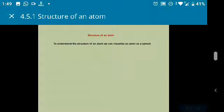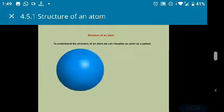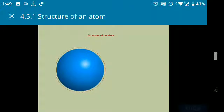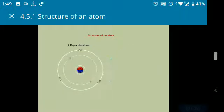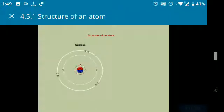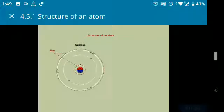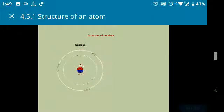To understand the structure of an atom, we can visualize an atom as a sphere. The atom has two major divisions. In the center of the atom, there is a nucleus. The size of the nucleus is extremely small compared to the size of the atom. Observe that the nucleus consists of two types of particles known as protons and neutrons.